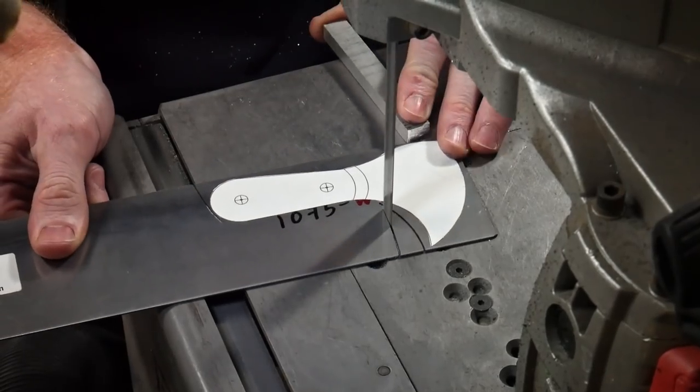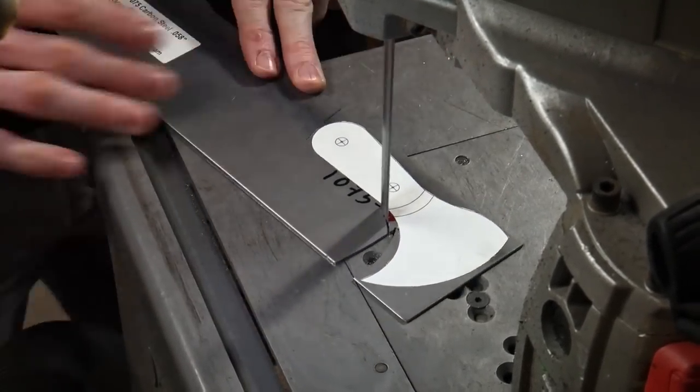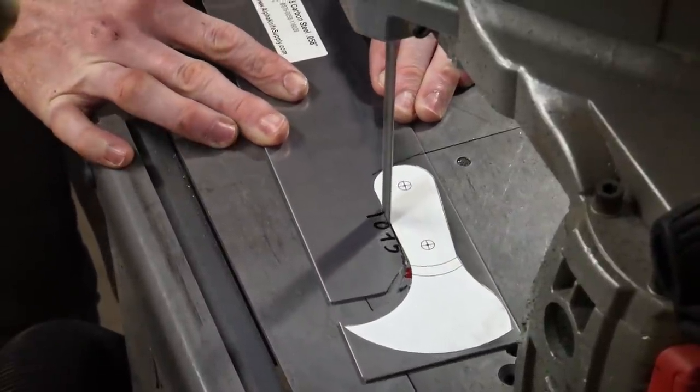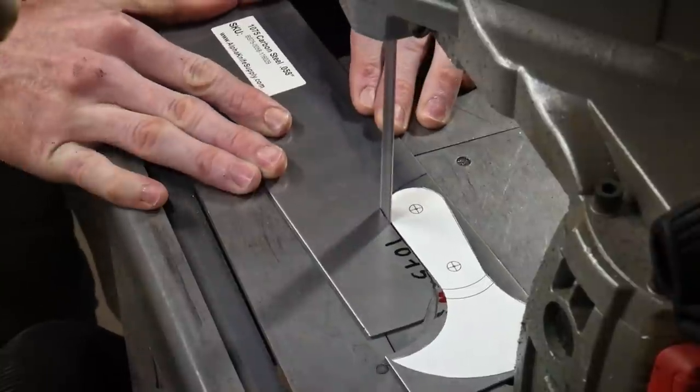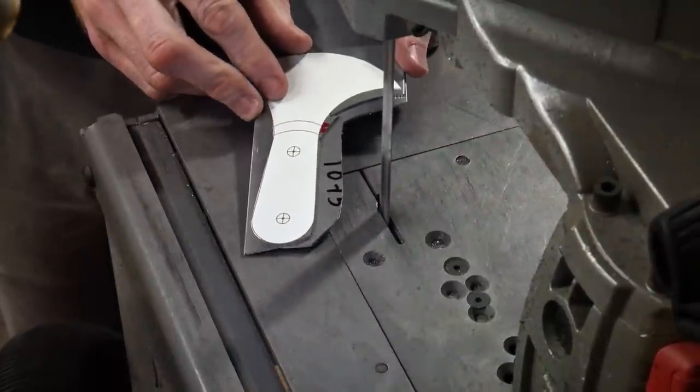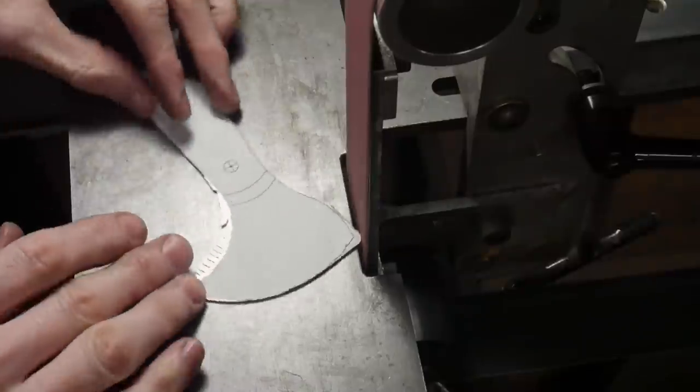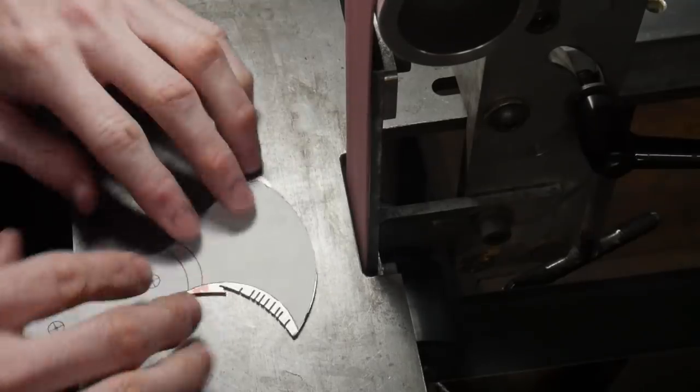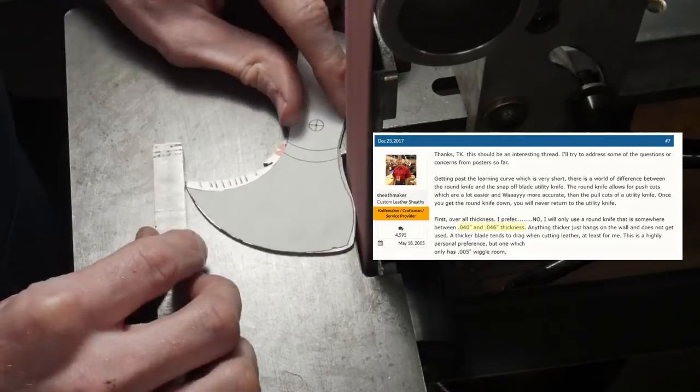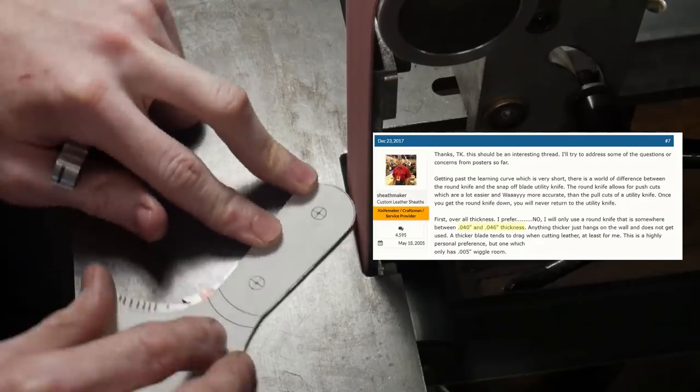While many of the pros use stainless steel for their head knives, I will be using a piece of 1075 so that I can heat treat it in my own home forge. I would normally use 1084, however I was not able to find a piece thin enough for this project. I ordered this piece of 1075 which is about 58 thousandths of an inch thick. We're going to be bringing this down substantially because according to Mr. Paul Long, who uses many head knives, the ideal thickness is somewhere around 41 to 46 thousandths.